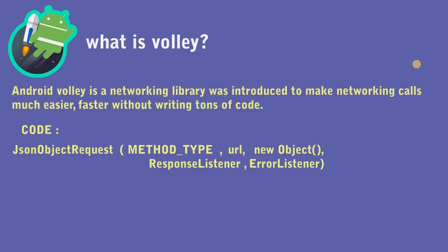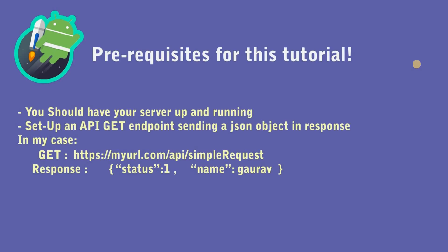Before looking at the code, let's check out the prerequisites. You should have your server up and running — I have mine on Heroku using Node.js, but you can use any language. The second prerequisite is that you should set up a GET API endpoint and send a JSON object in response. The URL might look something like https://myurl.com/api/simplerequest, and the JSON response should have a status attribute of 1 and a name attribute like 'Gaurav', which we'll place in the Hello World text view.